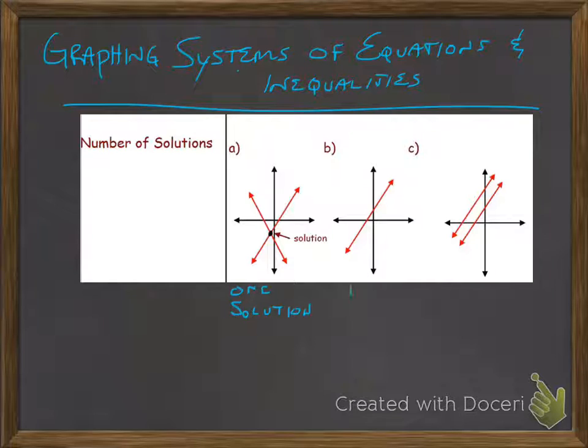You can have infinitely many solutions, and that is where the two lines actually end up on the same exact line. The two lines are actually the same line, so it's one right on top of the other one. And then there can be no solutions. No solutions are where the two lines are parallel, so they will never intersect.